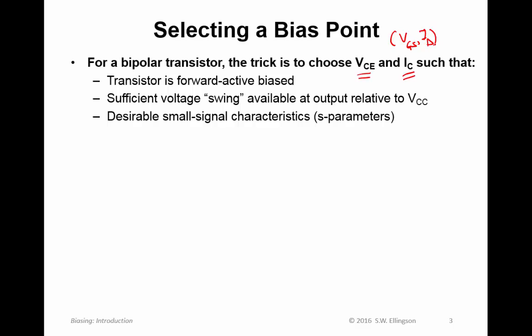We want to choose these parameters such that the transistor is forward active biased because that's what we need to make it work as an amplifier. We need sufficient voltage swing available at the output. For a common emitter transistor, we need to arrange the bias so that we have sufficient swing to accommodate an RF signal on the output. We also need desirable small signal characteristics. By small signal I mean RF. What that means is we would like to select a bias point such that we get S-parameters which are reasonable to use and facilitate solutions that have the characteristics we're looking for.